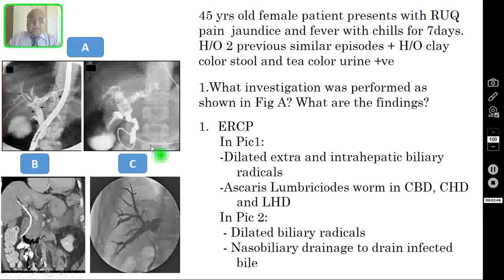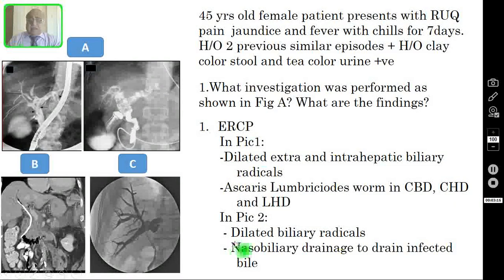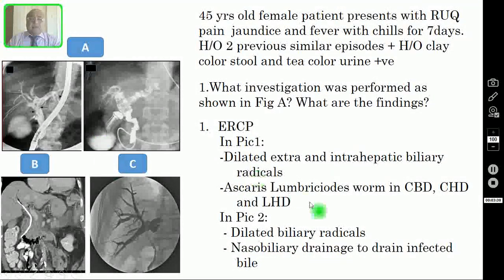In picture B, you are also seeing dilated biliary radicals, both extra-hepatic and intra-hepatic. This is after ERCP — they have removed the scope and put a stent inside the CBD. It is coming out of the ampulla of Vater and sphincter of Oddi into the duodenum, then going to the stomach and out through the nose. This is nasobiliary drainage to drain the infected bile.